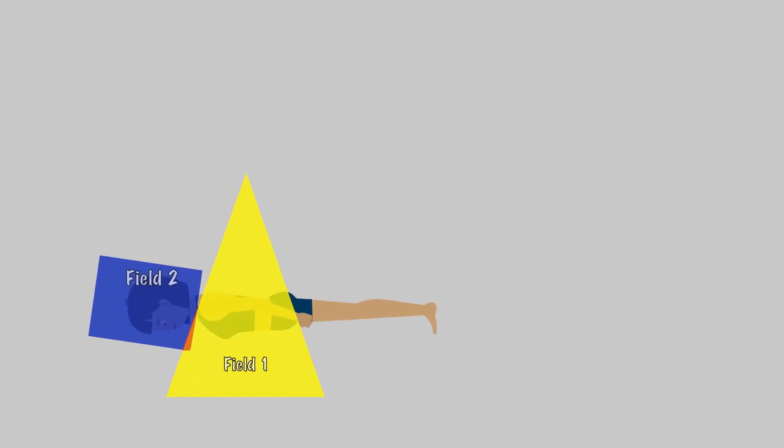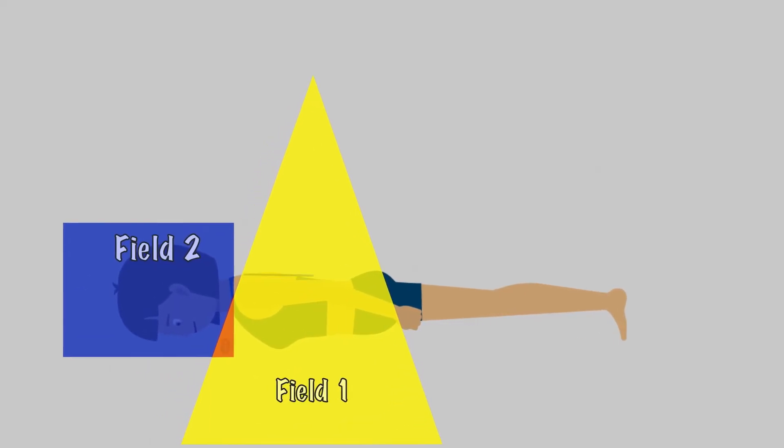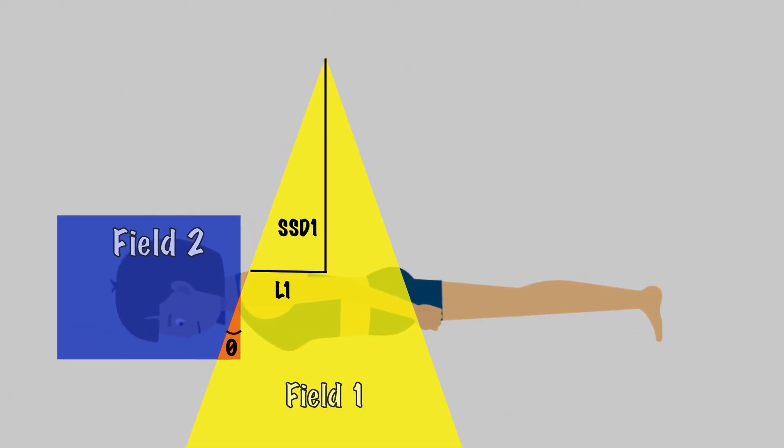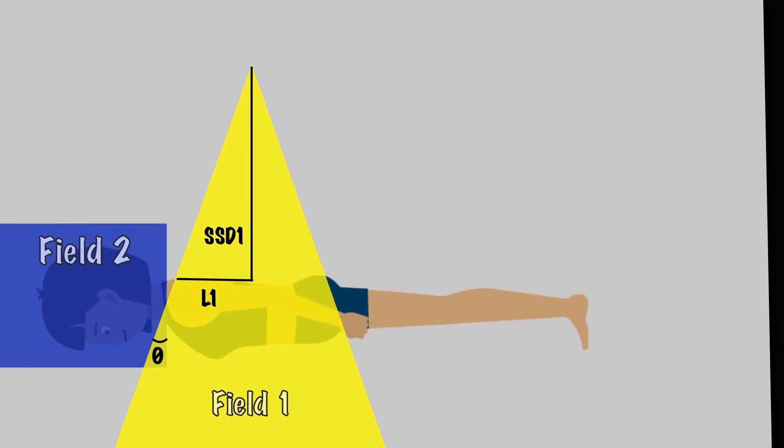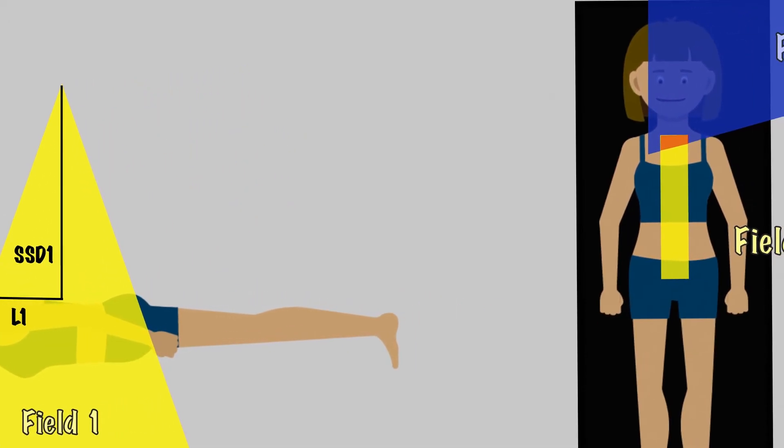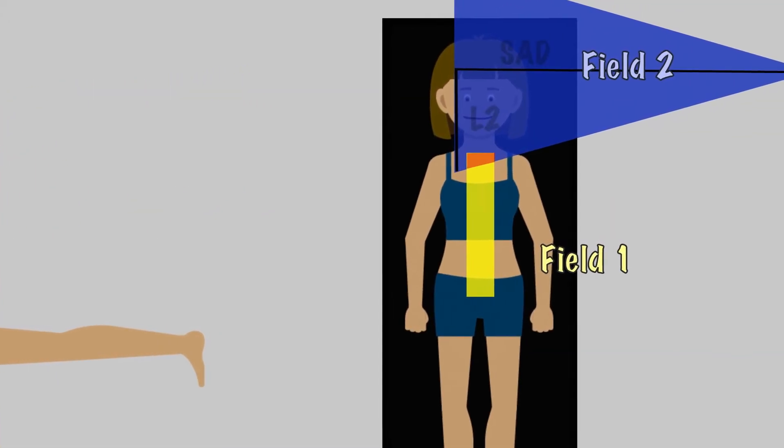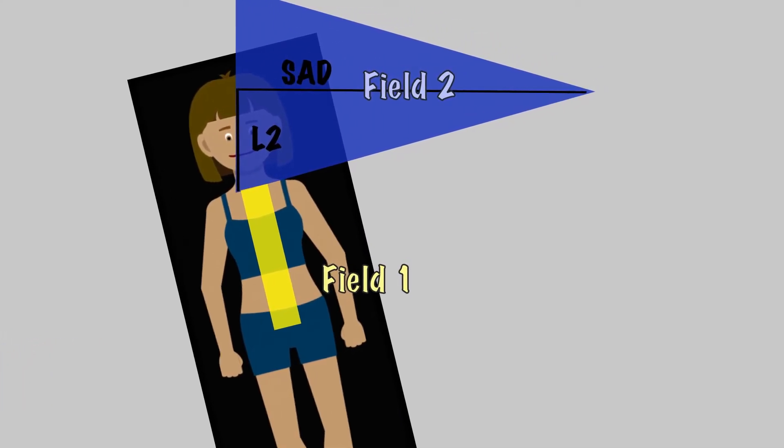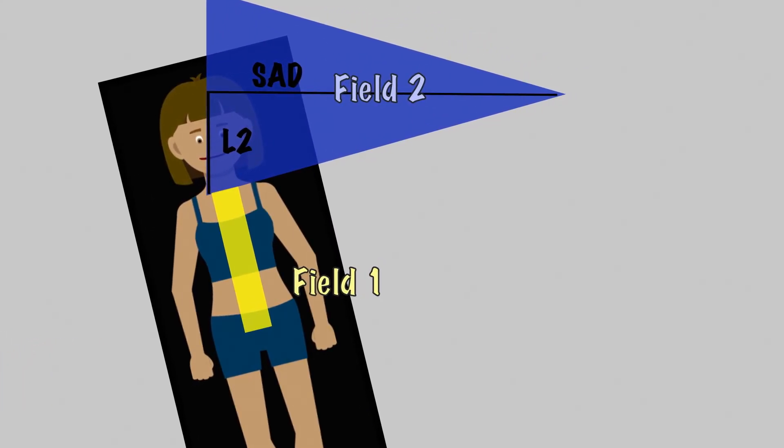For the collimator angle, we want to know this angle here. We would typically know L1 and SSD1, so we have the opposite and adjacent dimensions. Therefore, we can take the inverse tangent of L1 divided by SSD1 to get this angle. This accounts for the divergence from field 1. To account for the divergence of field 2, you will need to kick the couch toward the side of the beam you are treating. Now we are solving for this angle. Again, we will use the same formula, but this time we would use dimensions from field 2.